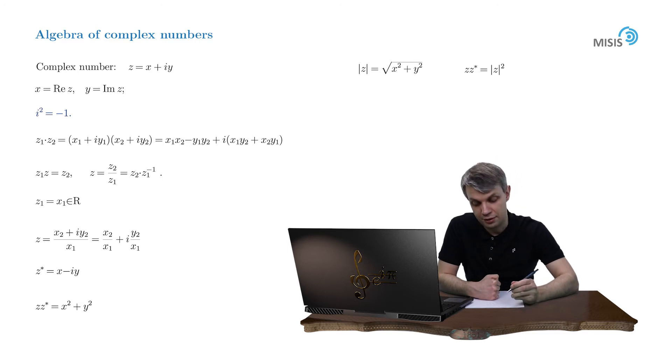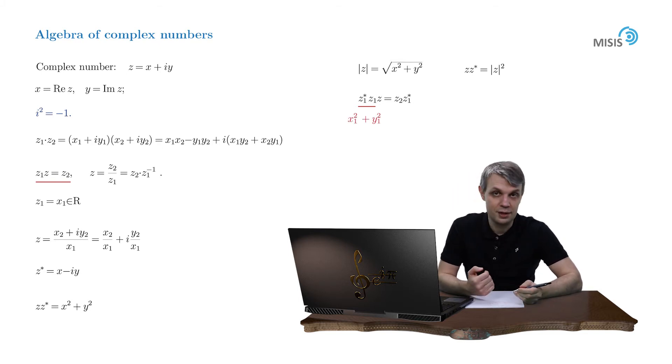Alright, and now let's return to our original equation. Let's multiply both parts of it by z1 star. Then in the left hand side we see that z1 star times z1 is a simple real number x1 squared plus y1 squared. And then we can easily isolate z in the left hand side. We simply divide both parts of this equation by this real number.